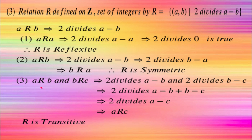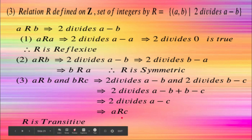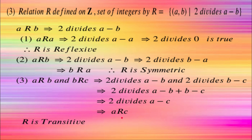For transitivity: if a is related to b and b is related to c, then 2 divides a minus b and 2 divides b minus c. Since both parts are divisible by 2, 2 divides (a minus b) plus (b minus c), which equals a minus c. That means a is related to c. It is transitive. So R is reflexive, symmetric, and transitive — therefore it is an equivalence relation.